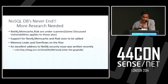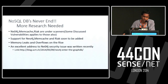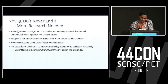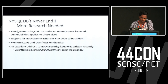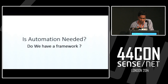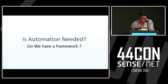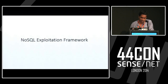NoSQL database security research doesn't end anywhere. Neo4j, Memcached, and Riak are also under the scanner. Some vulnerabilities have been discussed. Support for Memcached, Neo4j, and Riak are soon to be added to the framework. Memory leaks and overflows are on the rise. So the whole problem is: is there automation? Like, we have SQLMap for SQL injection — do we have a framework for NoSQL? This is where the need for a framework came. There was already a framework called NoSQLMap, but it only gave emphasis to MongoDB.